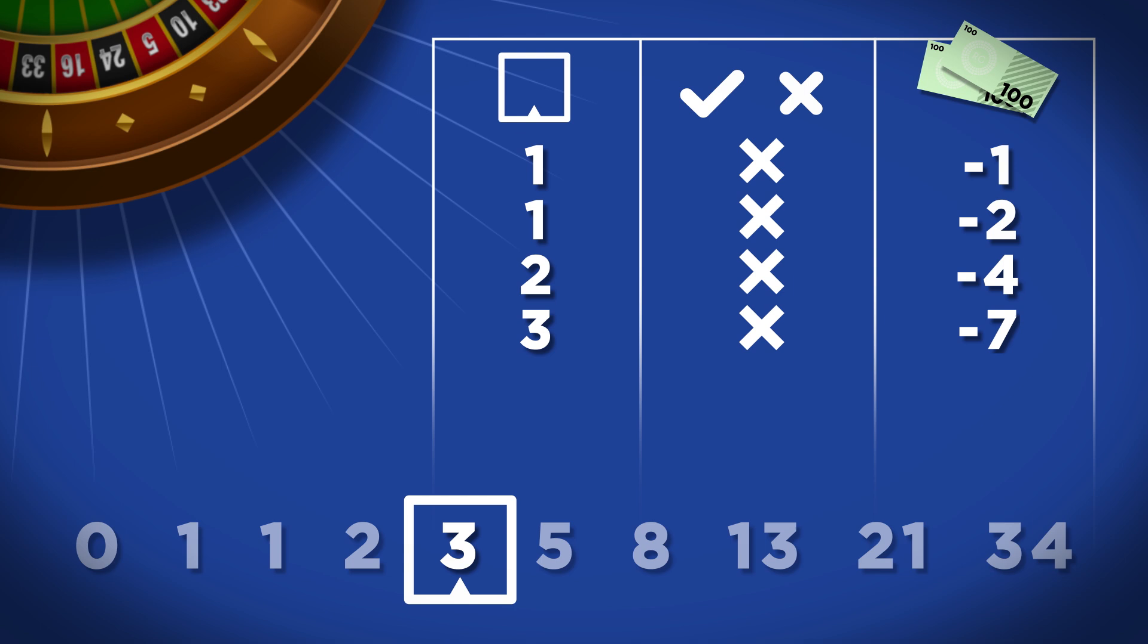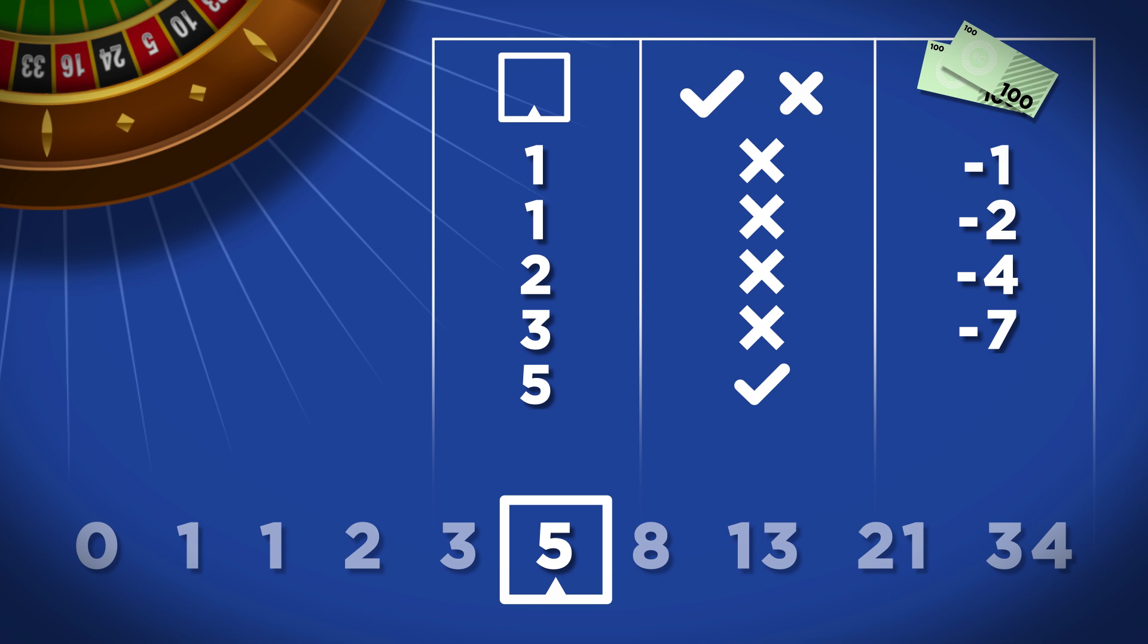Here's an example. Let's say you have a bad run and are on minus seven. We move to the next number on the sequence, five. That wins, meaning we've won back our last two bets.